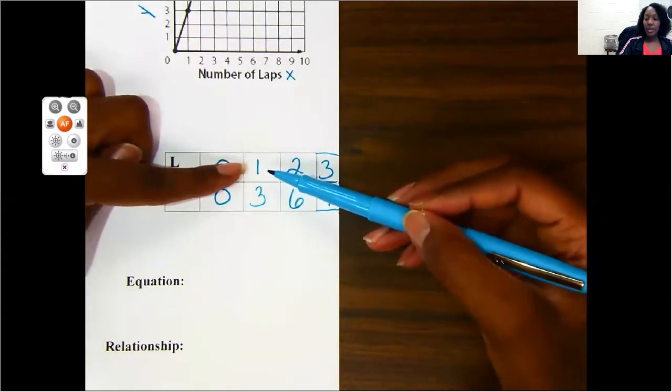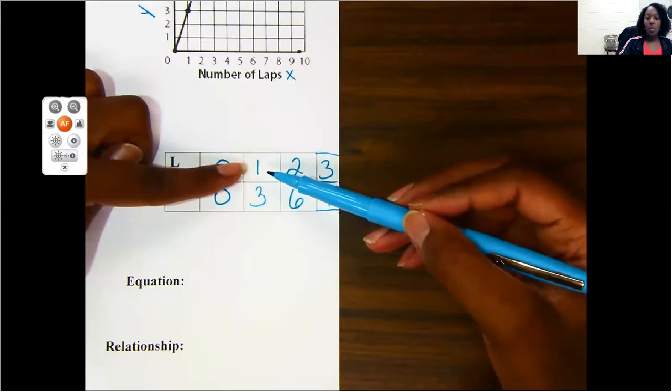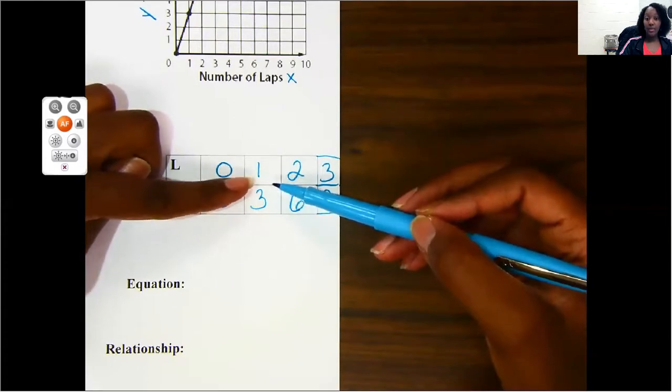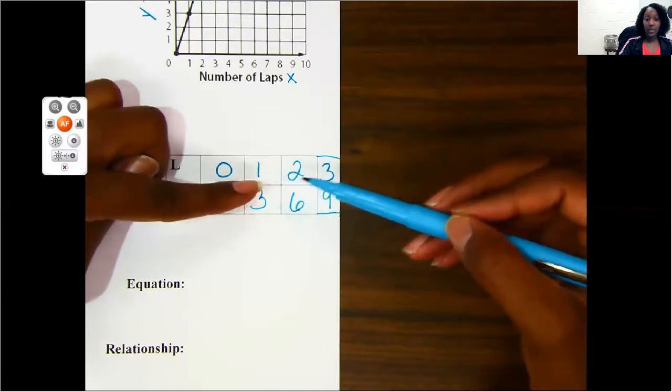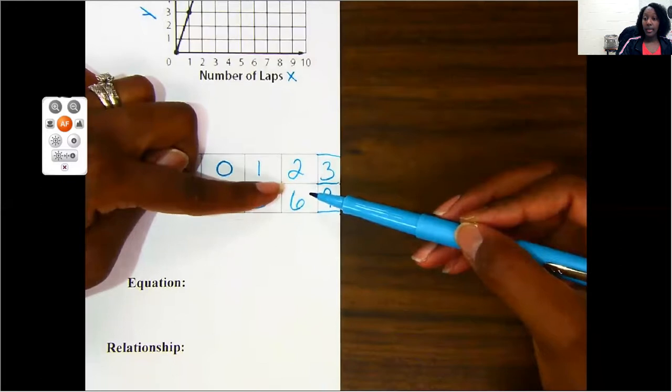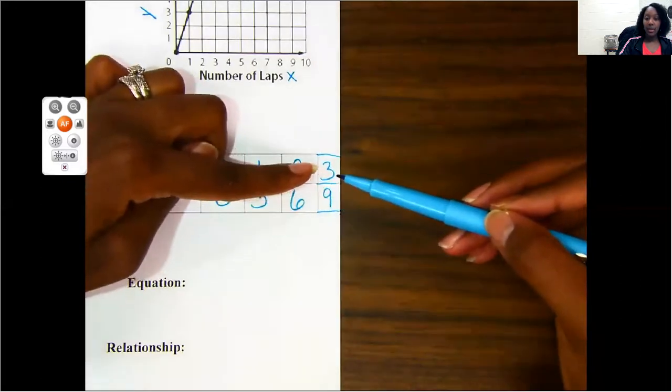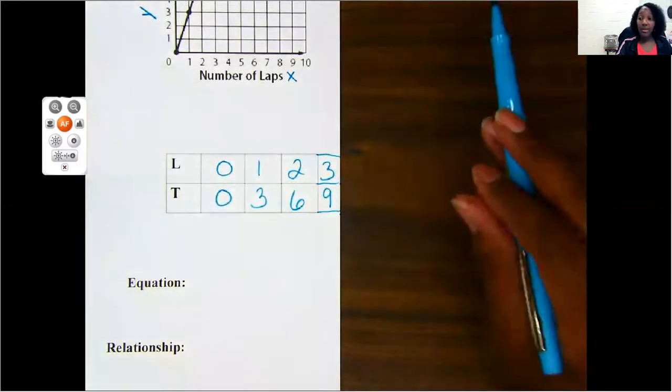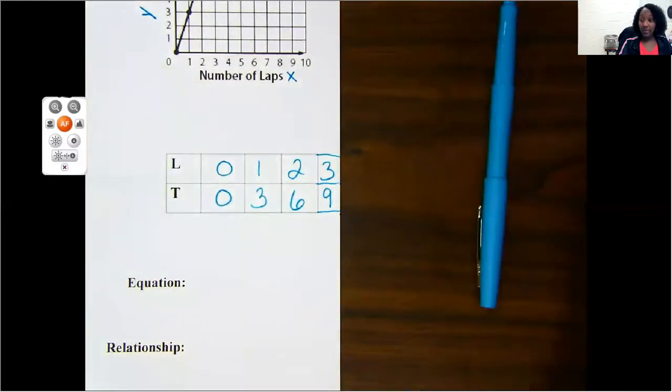So my other option is multiplication, because remember, my numbers are going up. What can I multiply one by to get to three? If you said three, that is correct. One times three does give me three. So let's try it with the next one. Does two times three give me six? It does. Does three times three give me nine? Yes, it does. So what am I doing to my x to get my y? I am multiplying x by three.